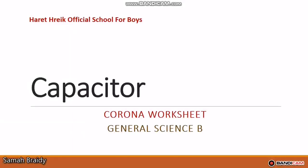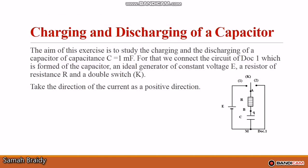Hello everyone. Today we will solve an exercise on capacitors for Grade 12 General Science: charging and discharging of a capacitor. The aim is to study the charging and discharging of a capacitor of capacitance C equal to 1 millifarad. We connect the circuit of Document 1, formed of the capacitor, an ideal generator of constant voltage E, a resistor of resistance R, and a double switch K, taking the current direction as positive.